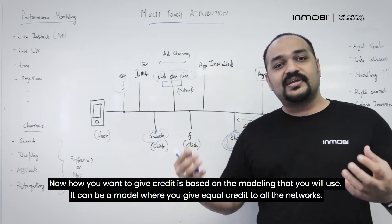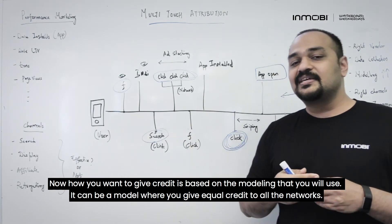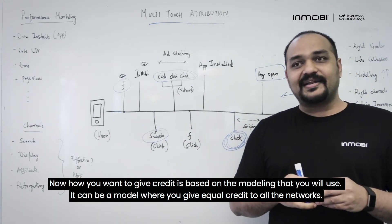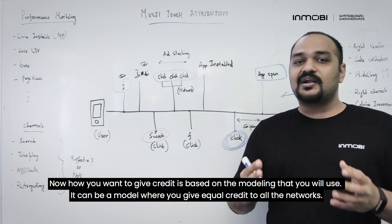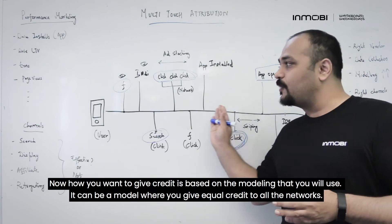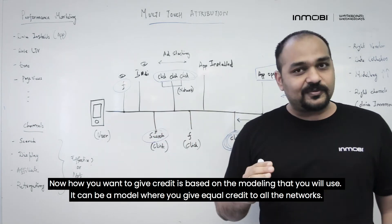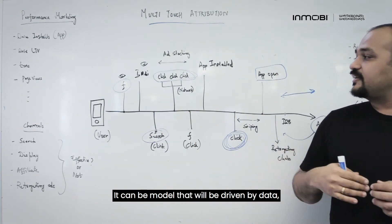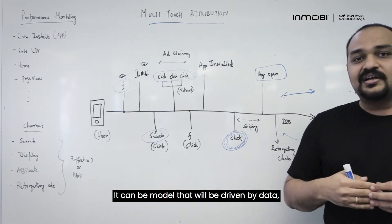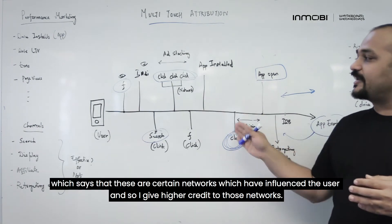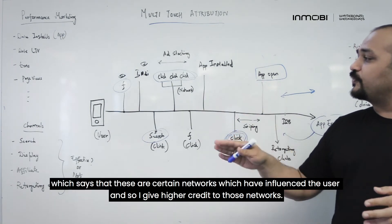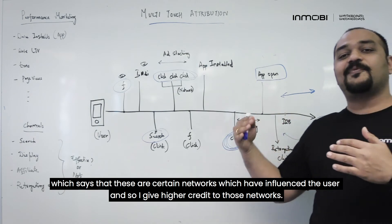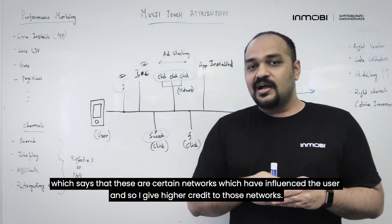How you want to give credit is based on the modeling you will use. It can be a model where you give equal credit to all the networks, or it can be a data-driven model that identifies certain networks which have influenced the user more and gives higher credit to those networks.